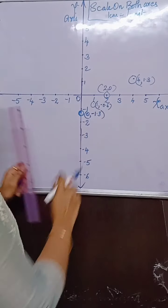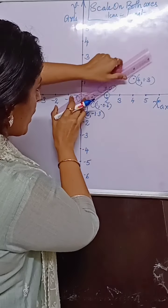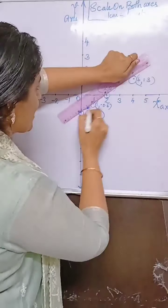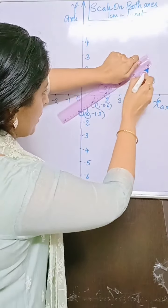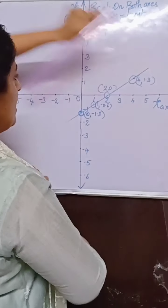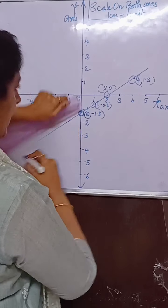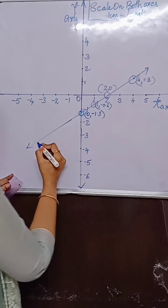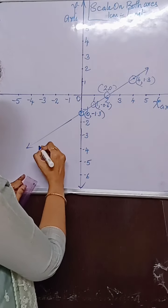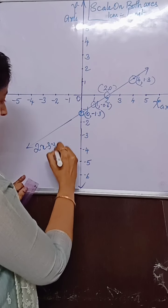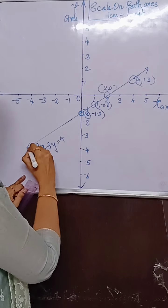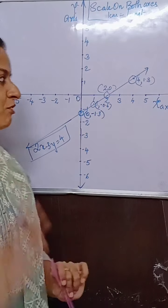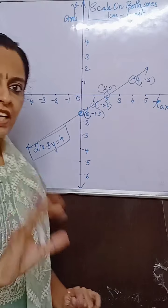All four points are coming in a line — so happy when you get something like this! Extend it a little more with arrows on both ends. Write down the equation: 2x minus 3y is equal to 4. Put it in a box. Neat and clean work. Now go for the second equation.